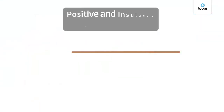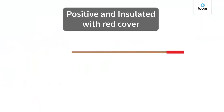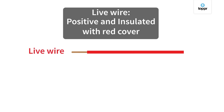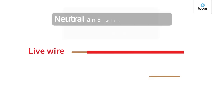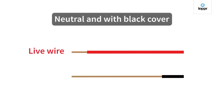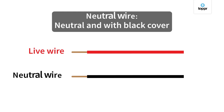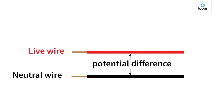One of the wires in the supply is positive and insulated with a red cover — that is called the live wire. Another wire with a black insulation cover is called the neutral wire. The potential difference between these two wires in India is 220 volts.